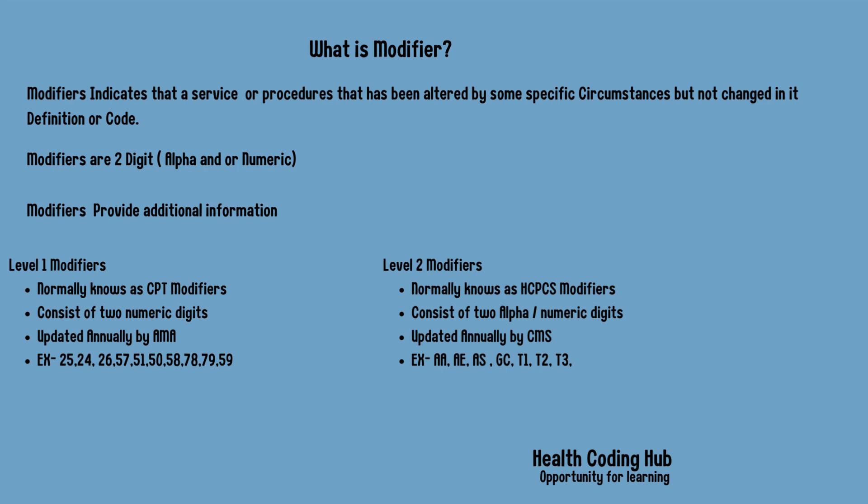Level 2 modifiers are basically known as HCPCS modifiers. They consist of alphabets and sometimes numbers, and are also updated annually by CMS — the Center for Medicare and Medicaid Services. Examples of HCPCS modifiers include T1, T2, and T3.